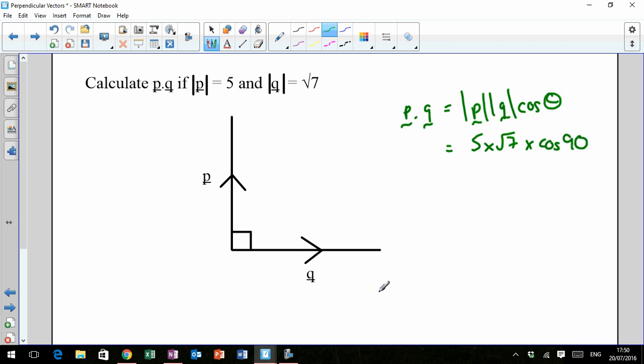Go back to your graph. Your cos graph, cos 90 is 0. So that's going to be 5 times root 7 times 0, which is going to be 0.